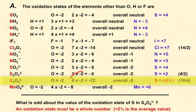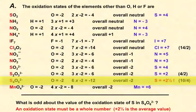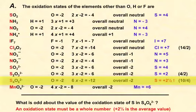For S4O6^2-: six oxygens give an overall charge of minus twelve. The sulfurs must contribute plus ten so that, combined with minus twelve from the oxygens, we get an overall charge of minus two. Since there are four sulfurs, we divide ten by four, meaning each sulfur has an oxidation state of plus 2.5.